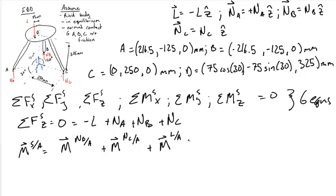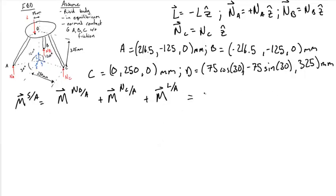In order to find this summation, we must find these individual moments. We know that the sum of all these moments from equilibrium is equal to the zero vector. To carry out this calculation, we must calculate each individual moment contribution separately.